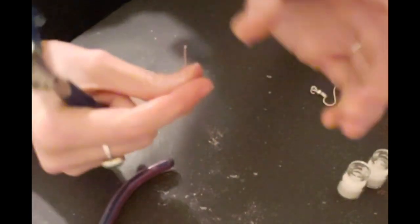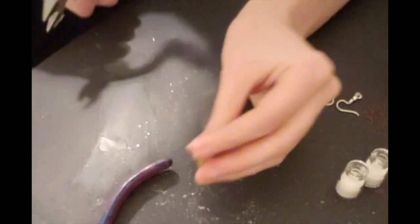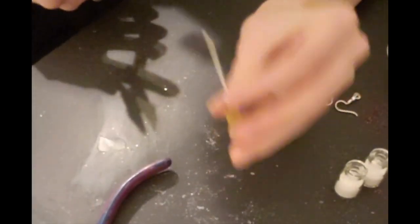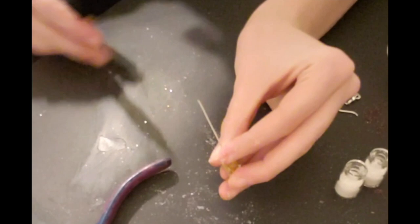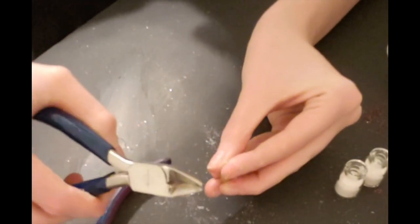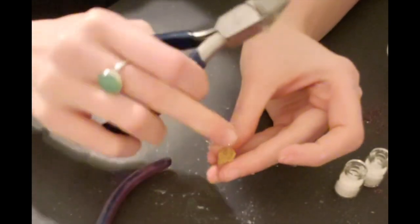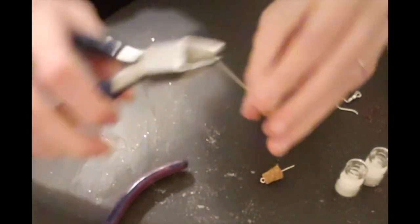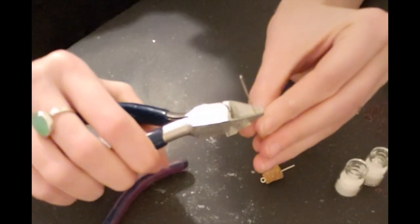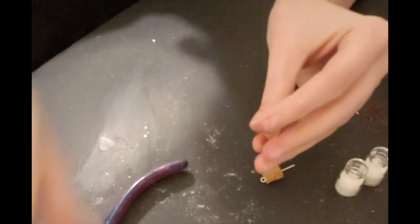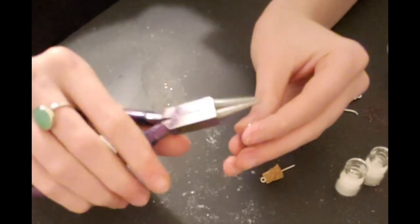we're going to trim these because we don't want our earrings to be this long. And how I always measure is I pinch it real close to the cork. And I trim off that wire so I have that. And then I repeat. And then I usually keep the wire clippings for another project.